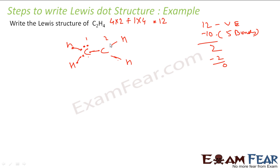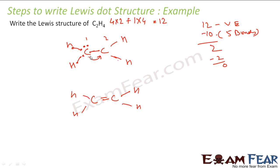So carbon 2 is unhappy and carbon 1 is happy. Since carbon 2 is sad, carbon 1 will share one electron with it as well. In that case, they will form a double bond. So carbon 1 gives or shares one electron with carbon 2 so that both are happy, and this new structure is formed.